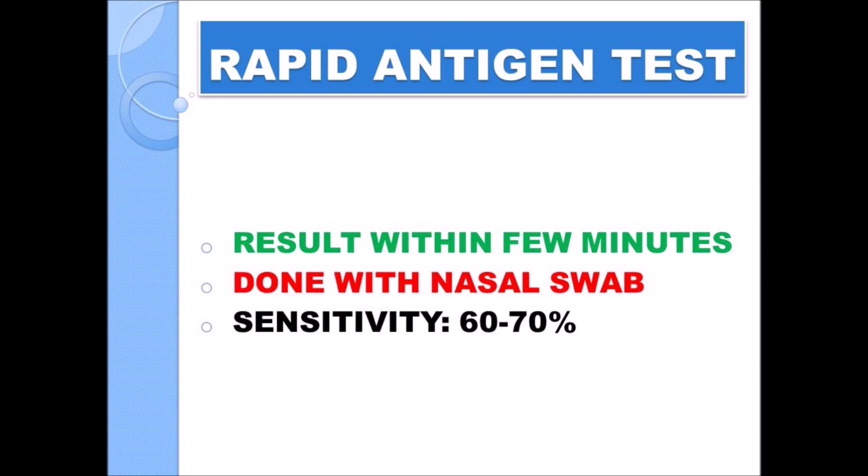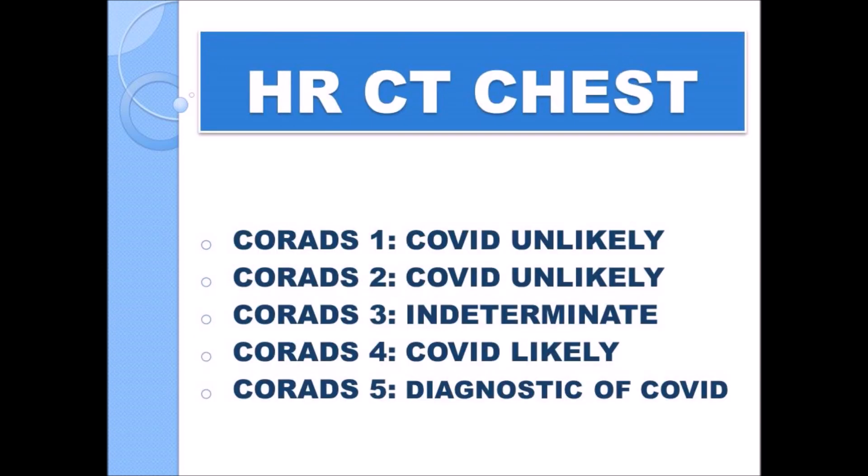However, 20 to 30 people can be missed. The next one is the rapid antigen test. It yields results within a few minutes and has a diagnostic sensitivity of around 60 to 70 percent. That means out of 100 people with COVID infection, only 60 to 70 will be identified, so there is a possibility of 30 to 40 people being falsely ignored.